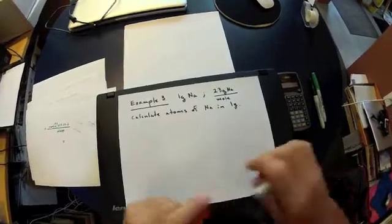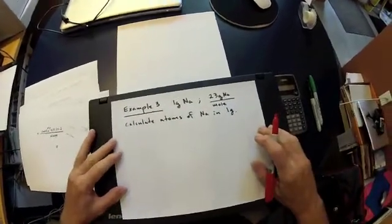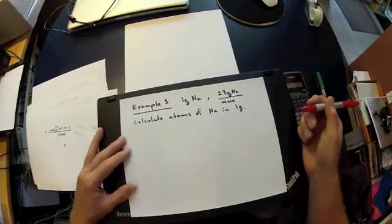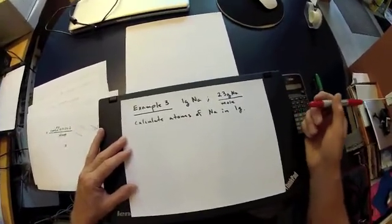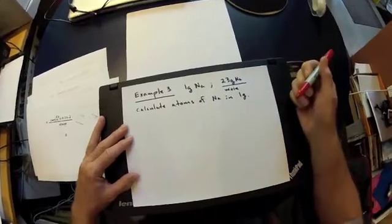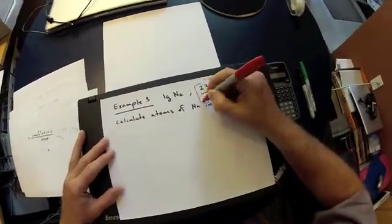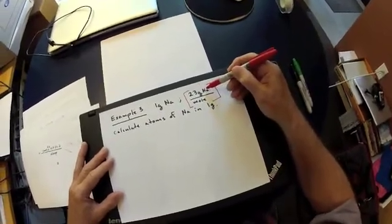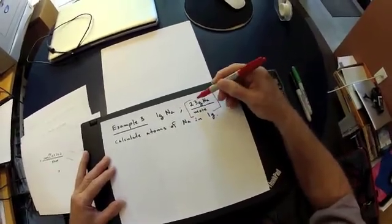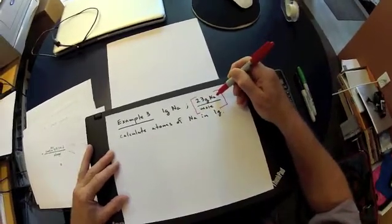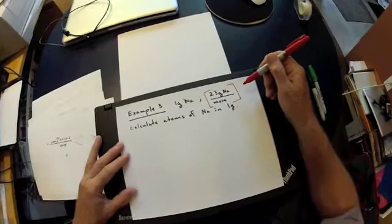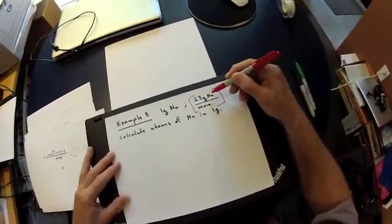Now we'll solve example number 3 freehand. The question: how many atoms of sodium are in 1 gram of sodium? The molar mass of sodium is 23 grams of sodium per mole — rounded from the periodic table value of 22.99 — to simplify our calculations here.